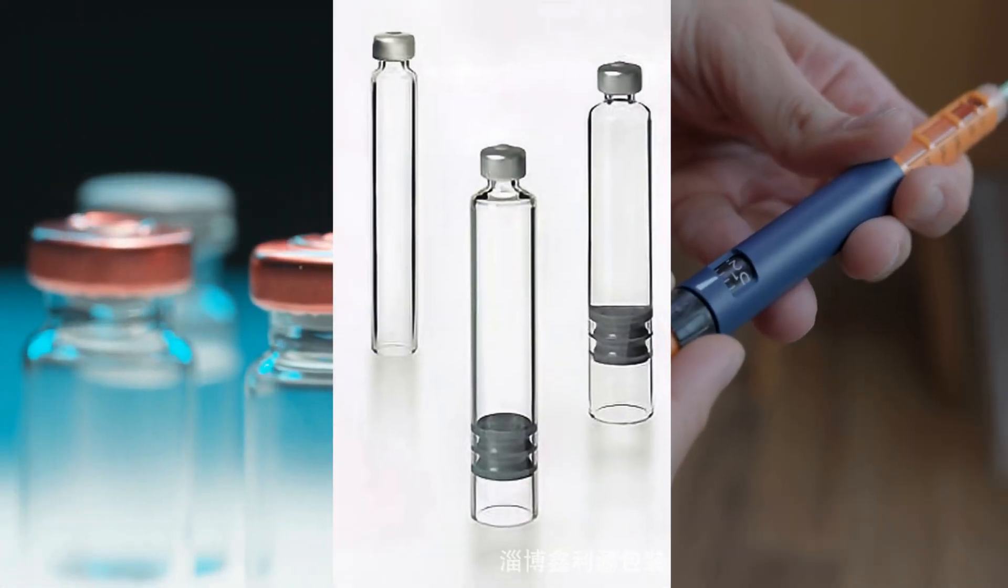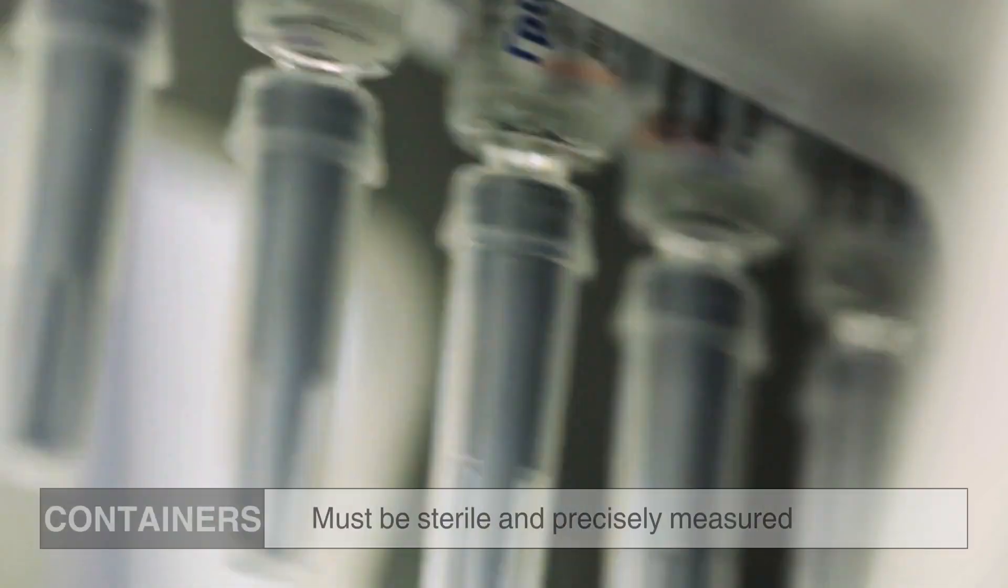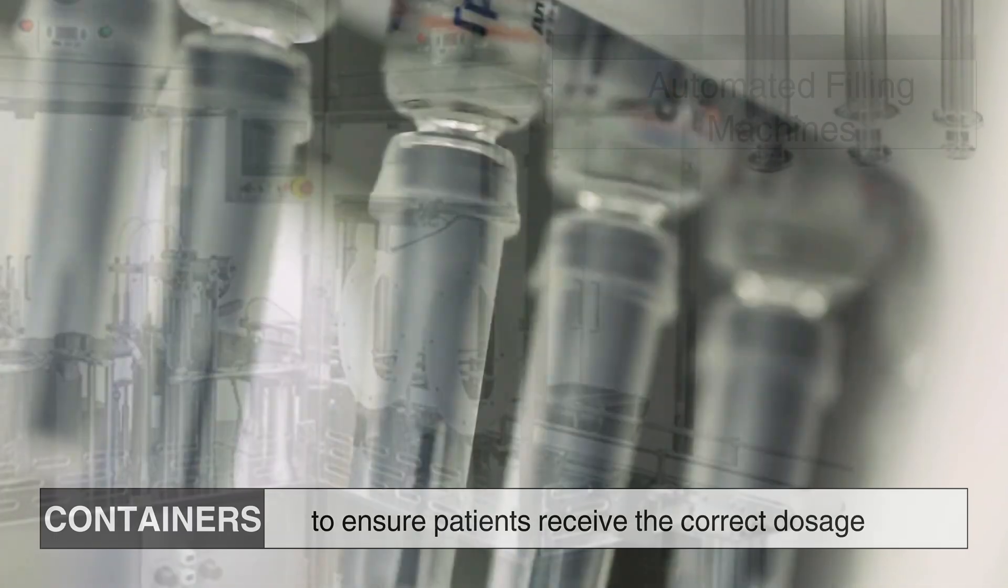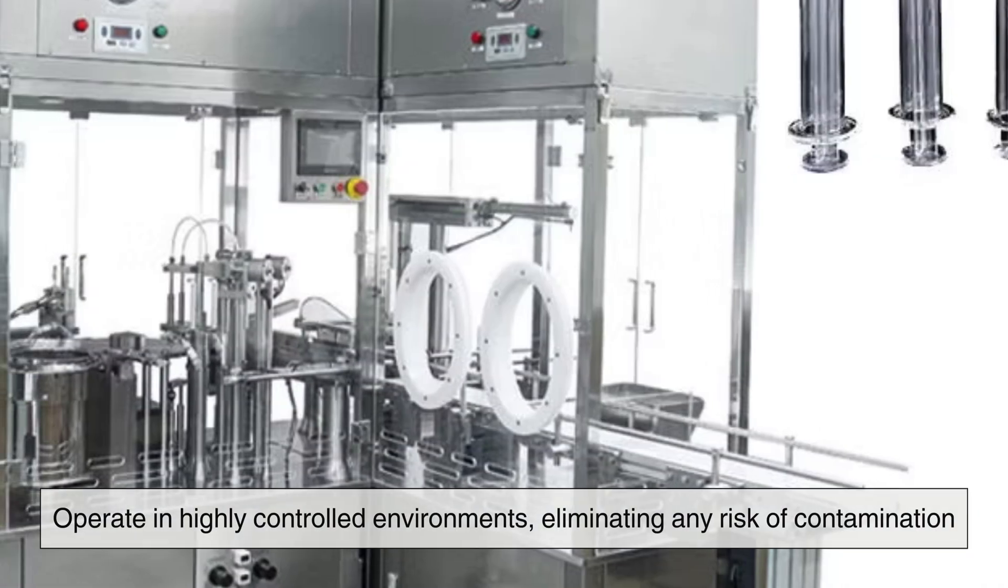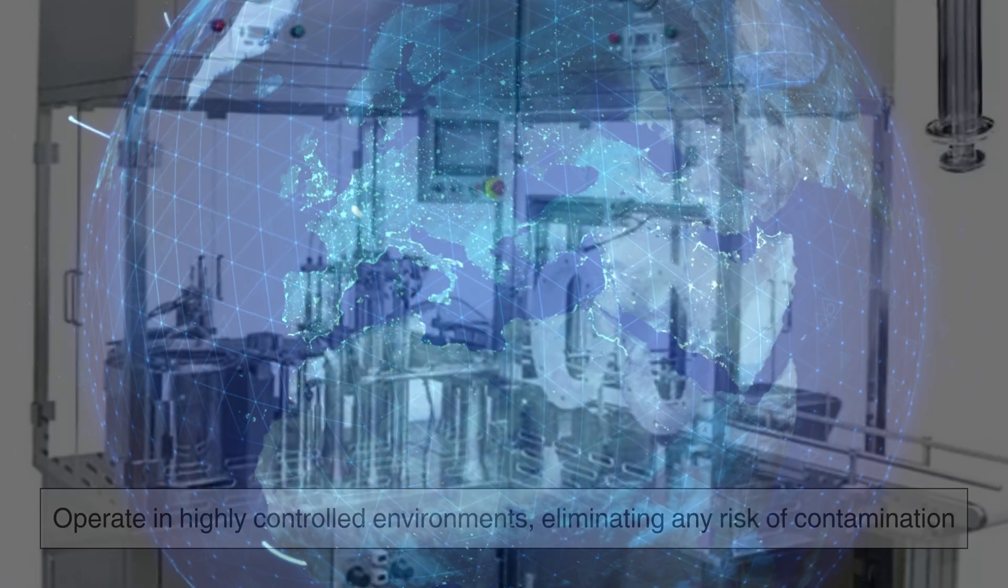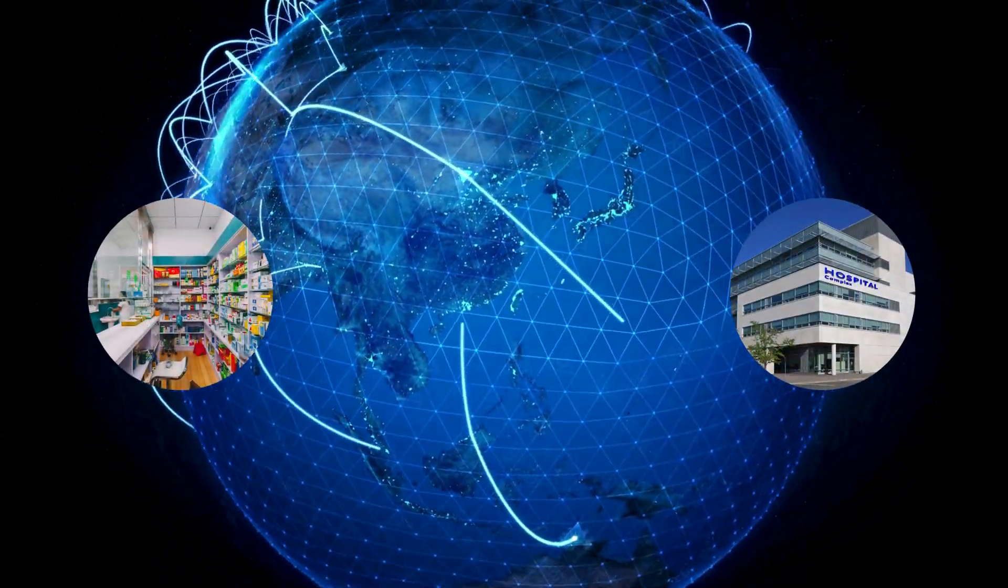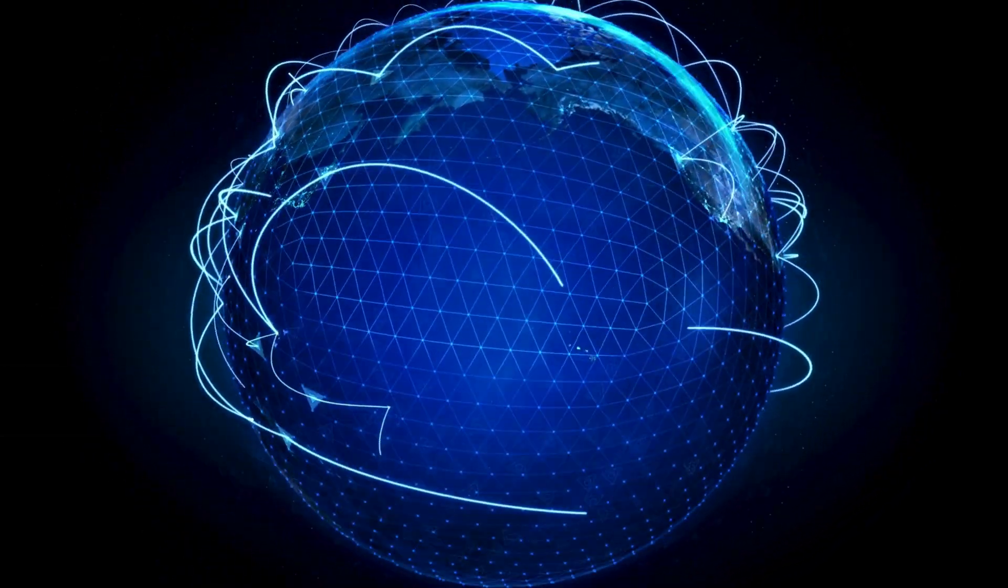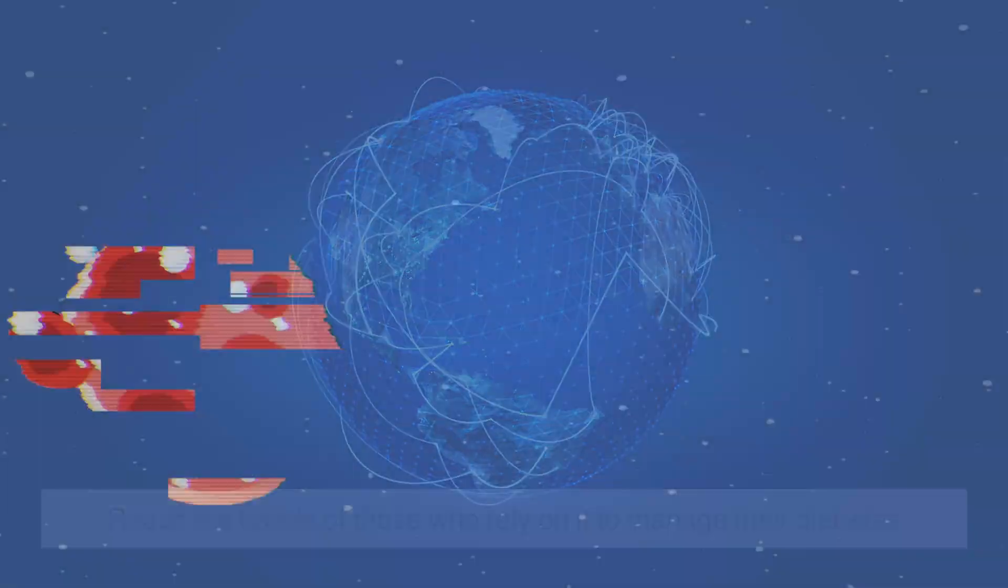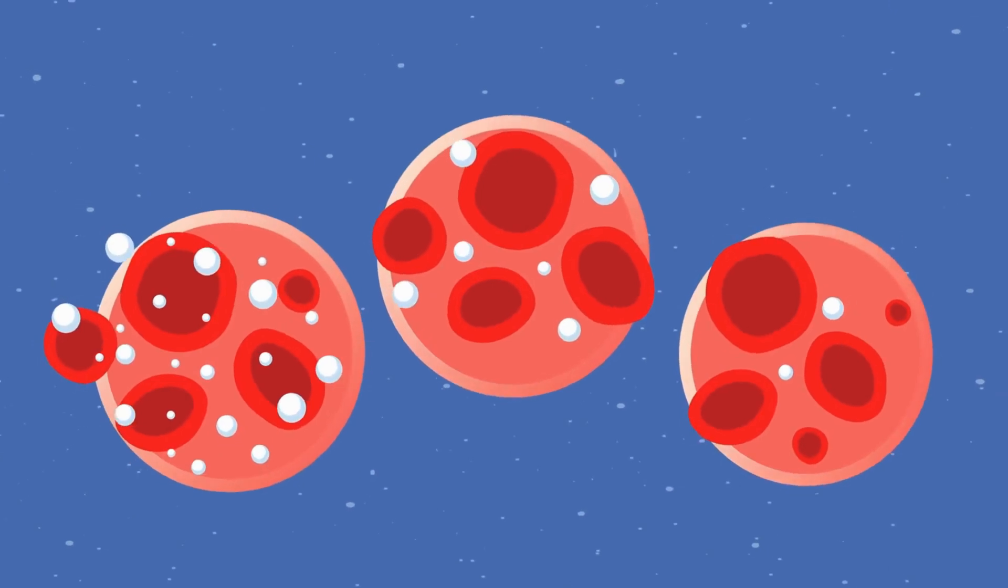The prepared insulin is then filled into vials, cartridges, or preloaded insulin pens. These containers must be sterile and precisely measured to ensure patients receive the correct dosage. Automated filling machines operate in highly controlled environments, eliminating any risk of contamination. Once filled, the insulin is packaged, labeled, and distributed to pharmacies and hospitals worldwide, where it will ultimately reach the hands of those who rely on it to manage their diabetes. The journey from microscopic bacteria to a finished, life-saving medication is nothing short of extraordinary.